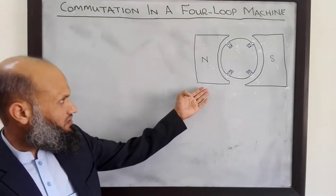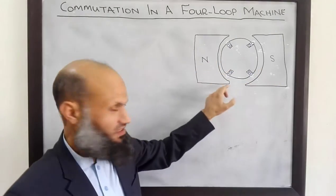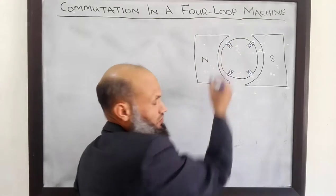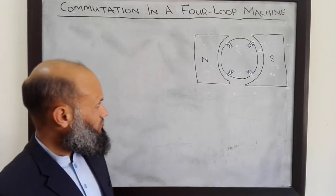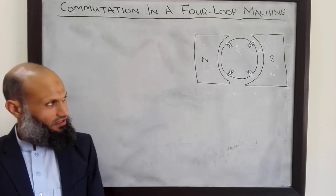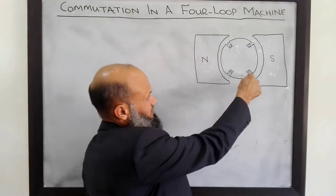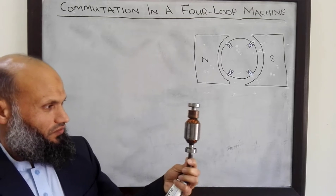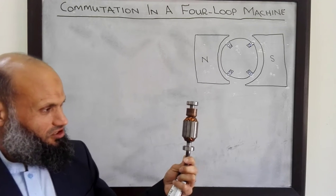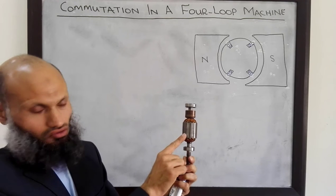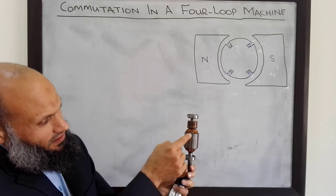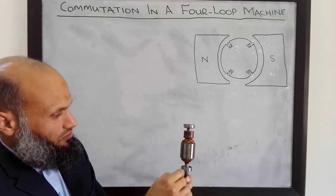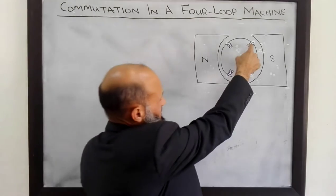Here we have a DC machine with a north pole and south pole. The pole faces are curved so that we have uniform flux density linking with the coils, and it is also perpendicular to the surface of the rotor. We have four coils. Since we have a 2D figure, we cannot show the complete coil — we have only shown the conductors in which voltage is being induced. Here is the real situation: a rotor of a small DC machine. The rotor is laminated to minimize eddy current losses.